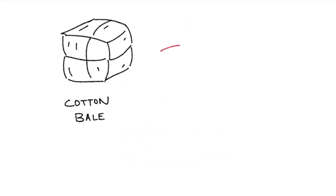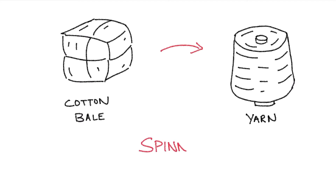Then the fibers are converted to yarn by the process called spinning. In this process the fibers are straightened and twisted together to form the yarn. The spinning process contains many complex steps to convert the fiber to yarn.